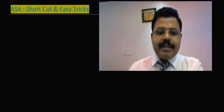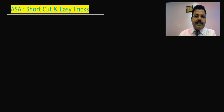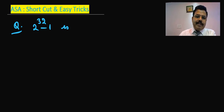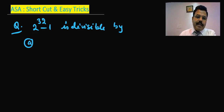Hello, welcome to another session of Tricks and Techniques class. Today I am going to discuss another divisibility and remainder test. The question is: 2 to the power 32 minus 1 is divisible by which one of the following? Option A is 11, option B is 13, option C is 15, option D is 17.